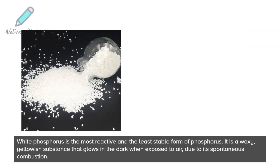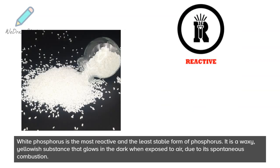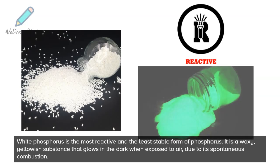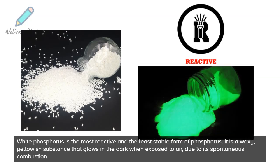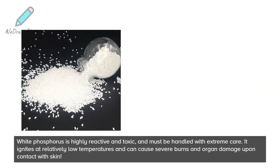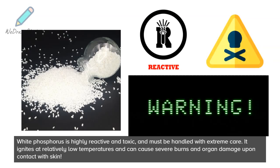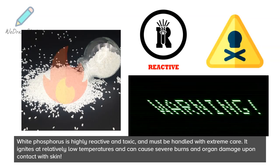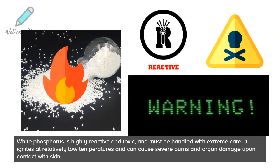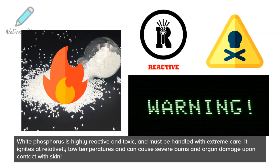White phosphorus is the most reactive and the least stable form of phosphorus. It is a waxy, yellowish substance that glows in the dark when exposed to air due to its spontaneous combustion. White phosphorus is highly reactive and toxic and must be handled with extreme care. It ignites at relatively low temperatures and can cause severe burns and organ damage upon contact with skin.